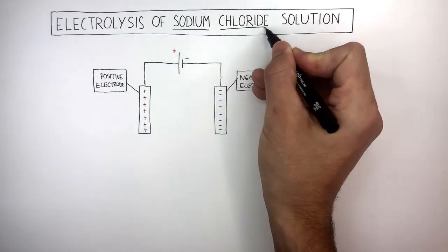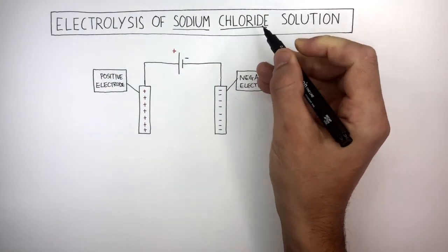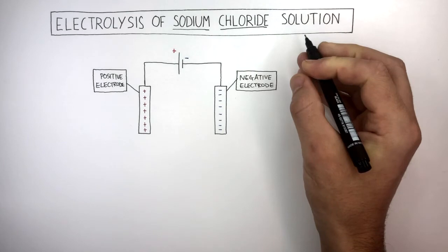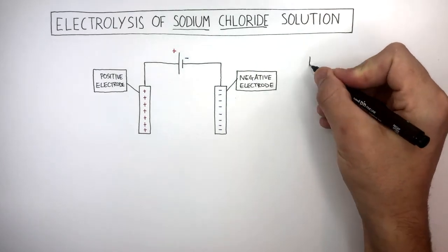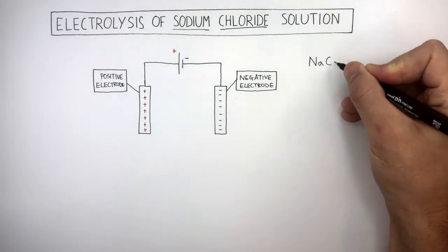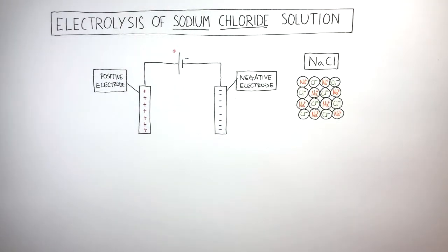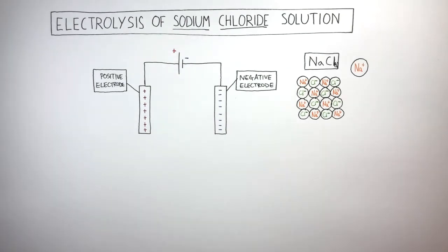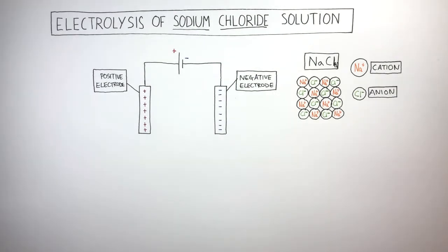Sodium chloride is an ionic compound and its chemical formula is NaCl. Solid sodium chloride has a giant ionic lattice structure made of sodium cations and chloride anions, which are held in a fixed arrangement and vibrate about their position. They are not free to move.